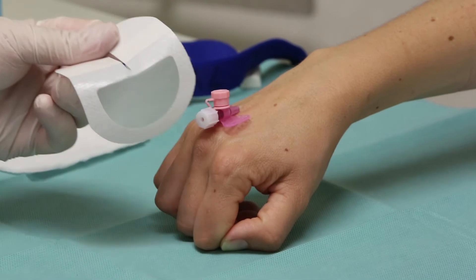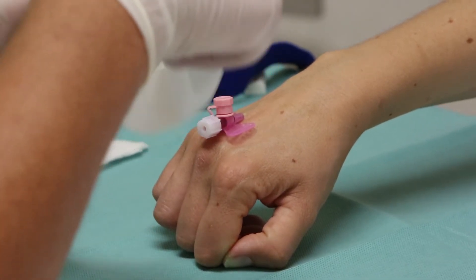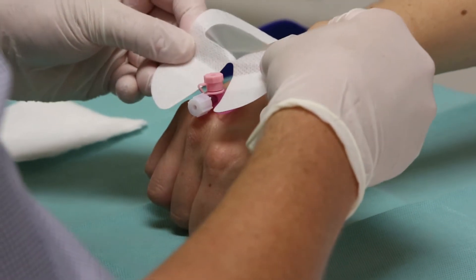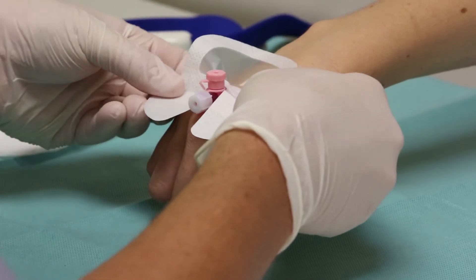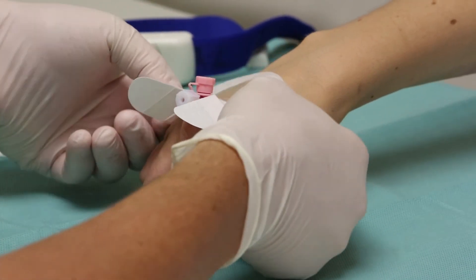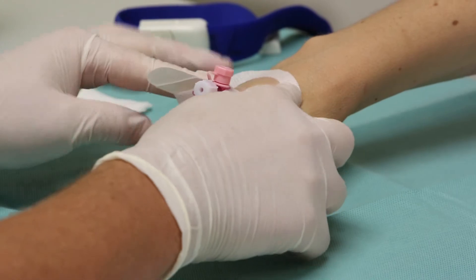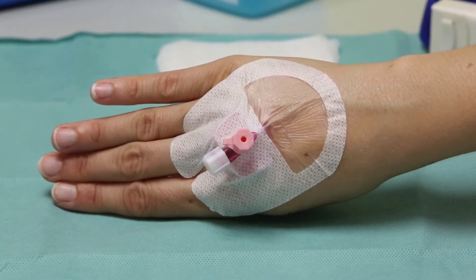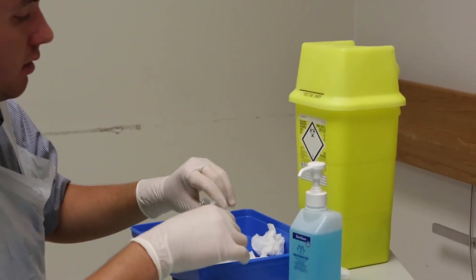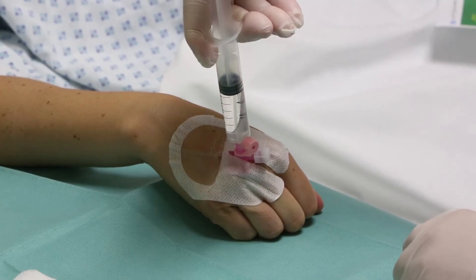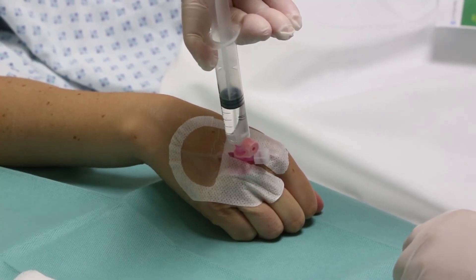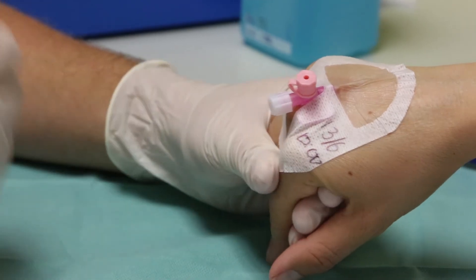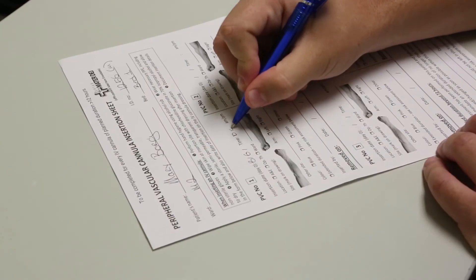Step 13. Apply a transparent semi-permeable dressing. Ensure the cannula exit site is clearly visible and the cannula is properly fixed. If the primed extension set is being used, remove the stopper and clean the port with 2% chlorhexidine in 70% isopropyl alcohol before connecting. Flush the cannula immediately and document the date and time of insertion on the cannula insertion document.